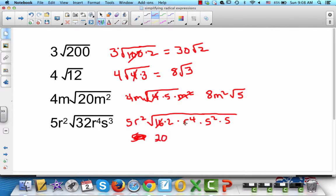The square root of r4 is r2. So we multiply r2 times r2 and we get r4. The square root of s squared is s. And on the inside we're left with 2s.